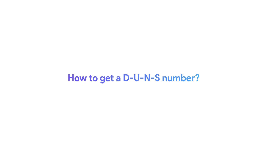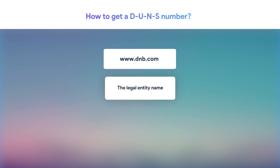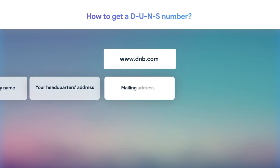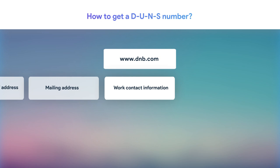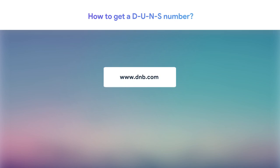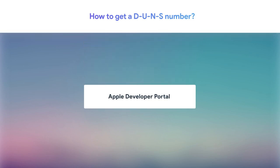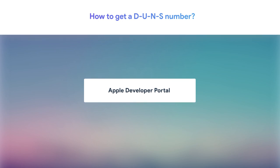How do you get the DUNS number? You can get one by requesting it at the Dun & Bradstreet website. Every branch of the same company will need a separate DUNS number. While requesting, you need to provide info like the legal entity name, your headquarters address, mailing address, and work contact information. D&B may contact your company directly and request more company info, so keep your company registration details close. It may take up to 5 to 30 business days to receive the DUNS number, and another 2 days for Apple to receive it. Optionally, if you join the Apple Developer Program, you can request a DUNS number from the Developer Portal.